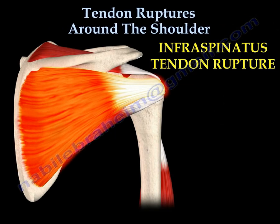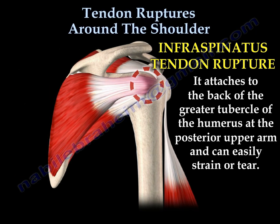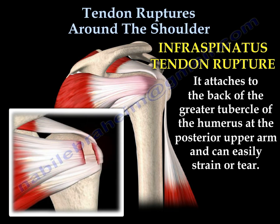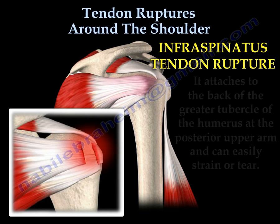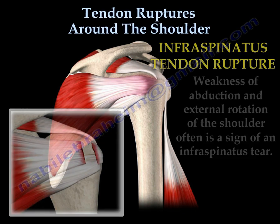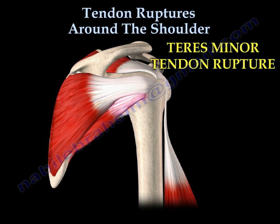Infraspinatus tendon rupture. The infraspinatus attaches to the back of the greater tubercle of the humerus at the posterior upper arm and can easily strain or tear. Weakness of abduction and external rotation of the shoulder is often a sign of an infraspinatus tear. Rupture may also include the tendon of the teres minor.